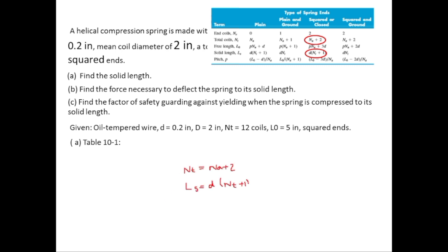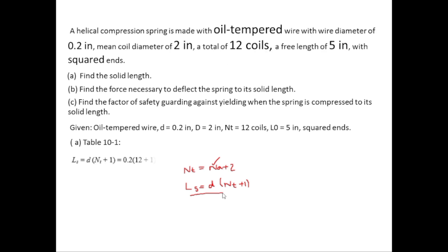LS equals D times NT plus 1. This formula is used for calculating solid length. For LS, put the value of D and NT that will give you LS equals 2.6 inches. To find NA, bring this 2 to the other side, so NA equals NT minus 2. NT is 12, so NA equals 10.